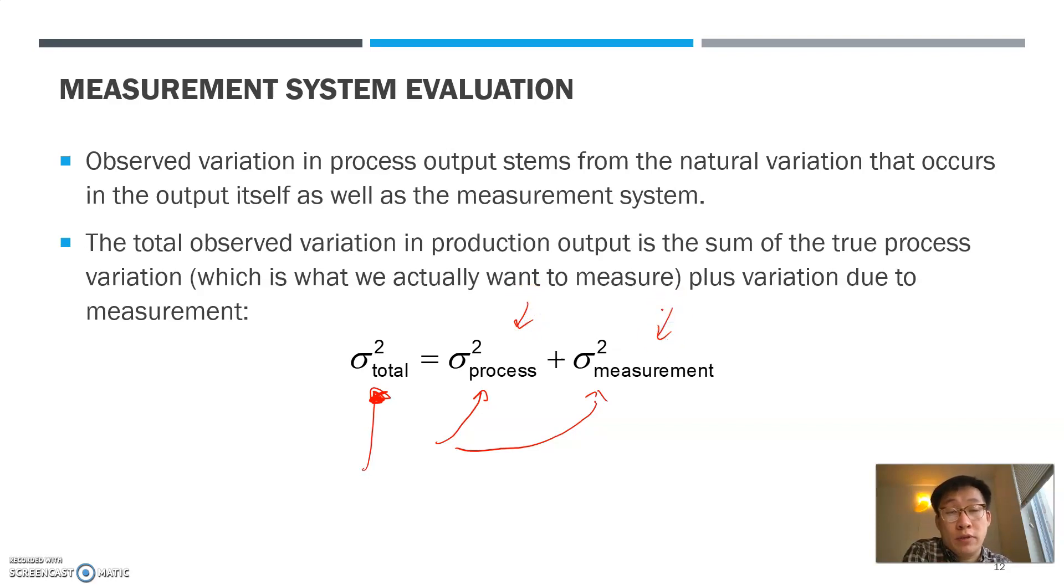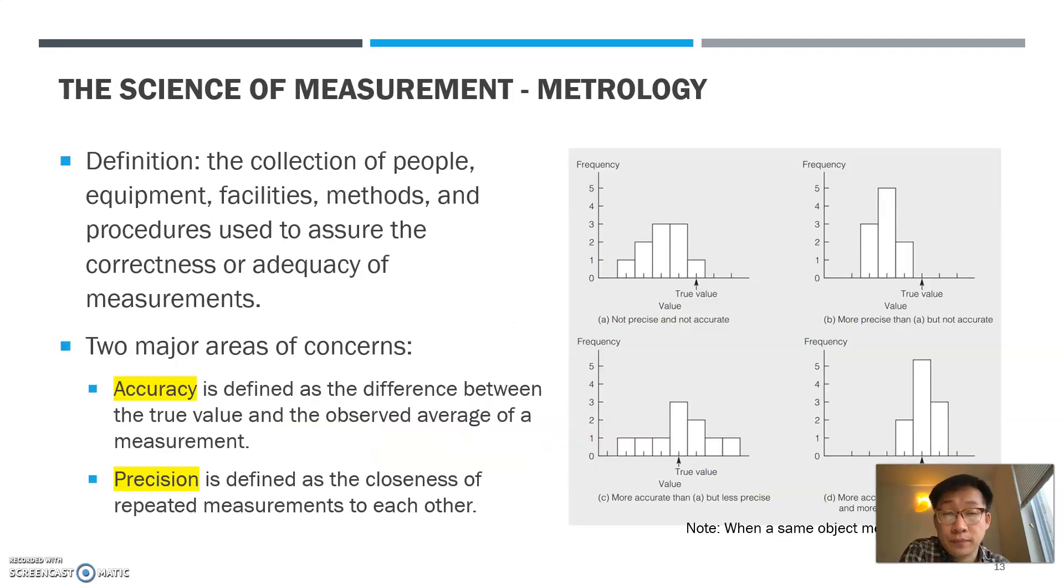One is the process itself, the other one is coming from the measurement. Sometimes measurement itself can increase the variance so that your captured variance may not be necessarily the correct, the true process variance. So this is a fundamental insight.